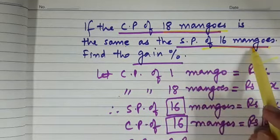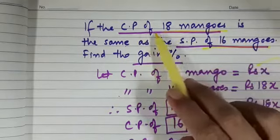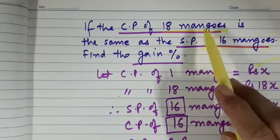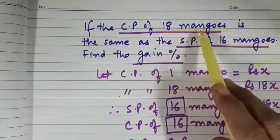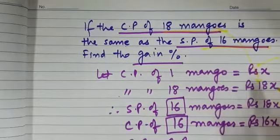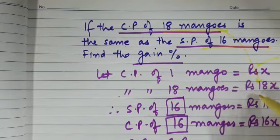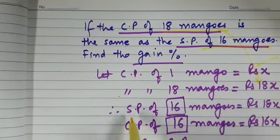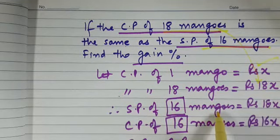Now we are given selling price of 16 mangoes is same as cost price of 18 mangoes. We have calculated cost price of 18 mangoes, it is 18x. So this 18x will be selling price of 16 mangoes.